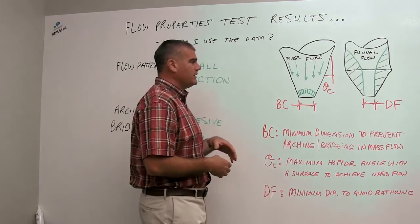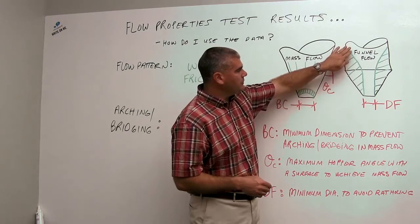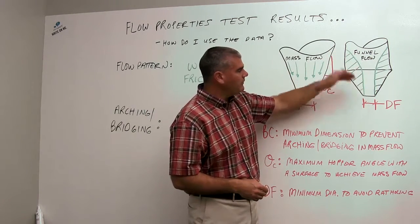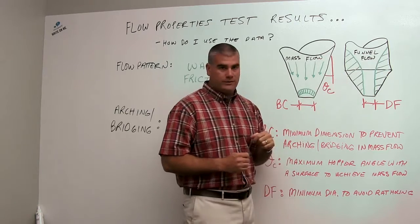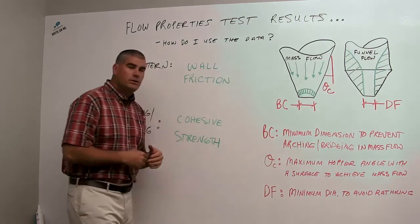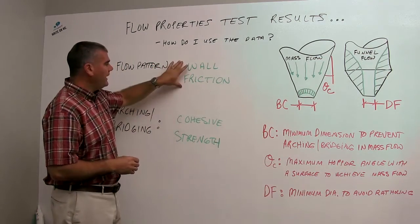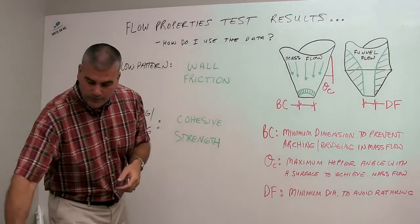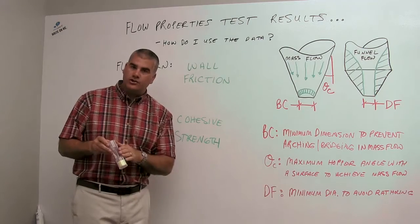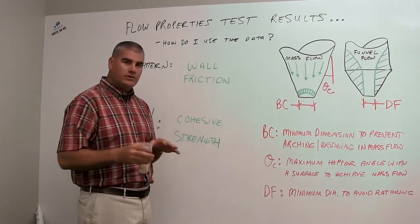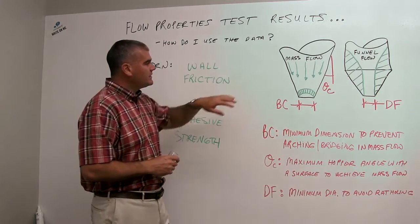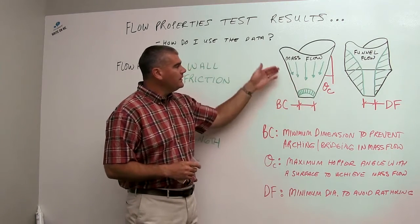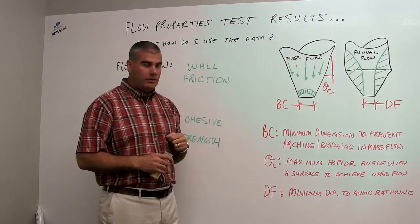Contrast that to something called funnel flow, where material prefers to funnel through itself rather than flowing along the walls of the hopper. So when we look at wall friction data, this is going to be able to tell us for a hopper, and we're often looking at cones, and there are other geometries as well. Today we're just going to focus on cones.